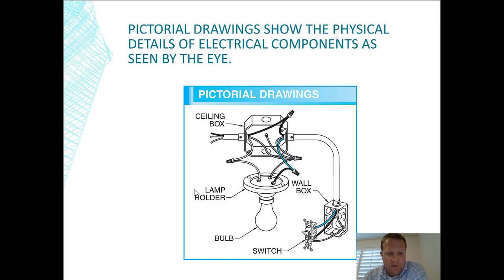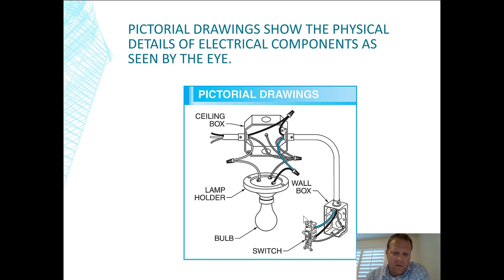Pictorial drawings show the physical details of electrical components as seen by the eye. Now we're getting into schematics. In this example, power is coming in, the black wire is the current-carrying conductor. Black wire comes in through the switch, comes back to the light through the blue wire. The switch on your wall is only interrupting the hot wire — the neutral and ground are not being independently interrupted.